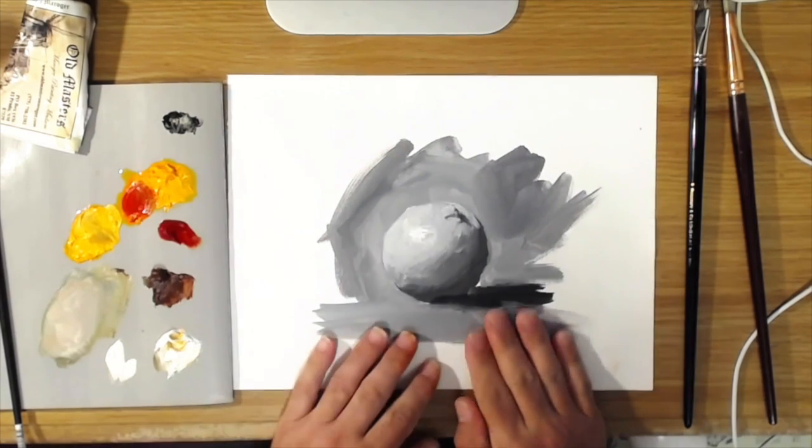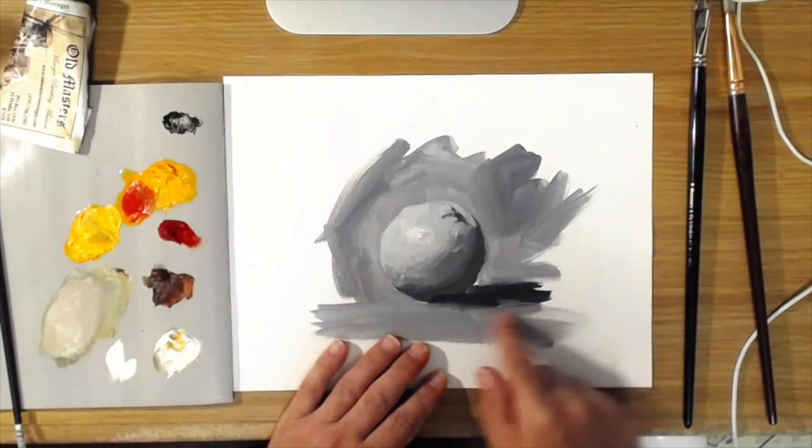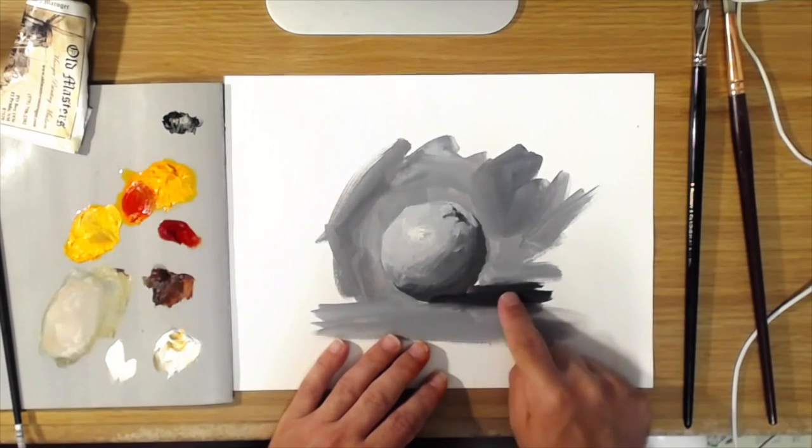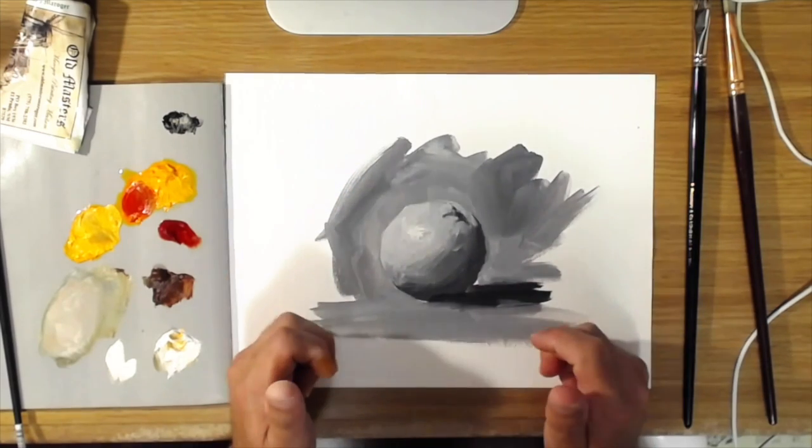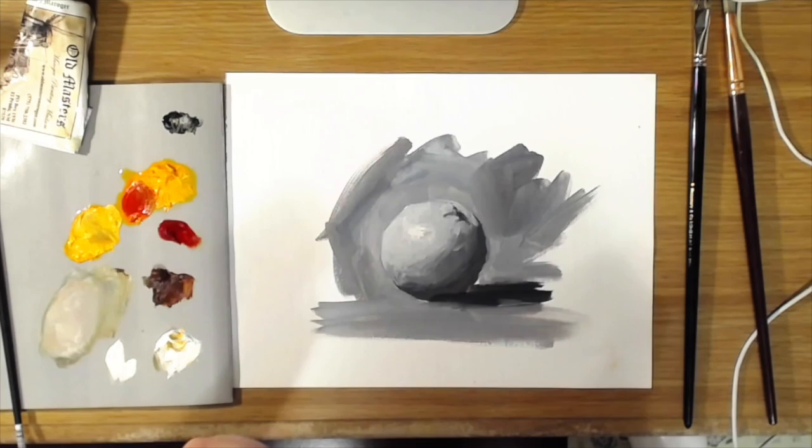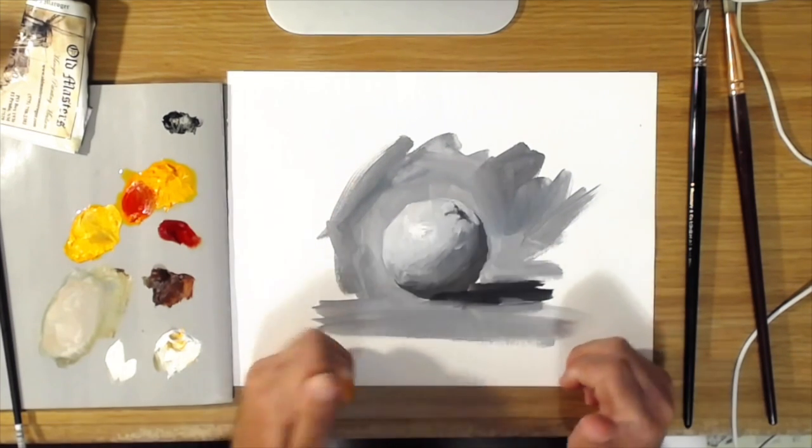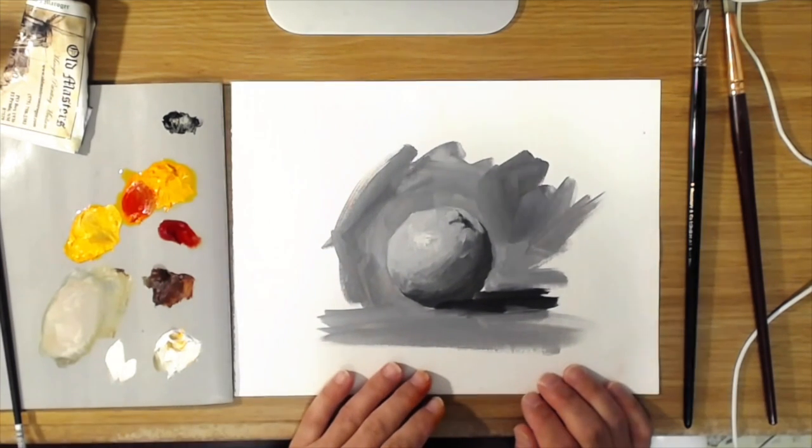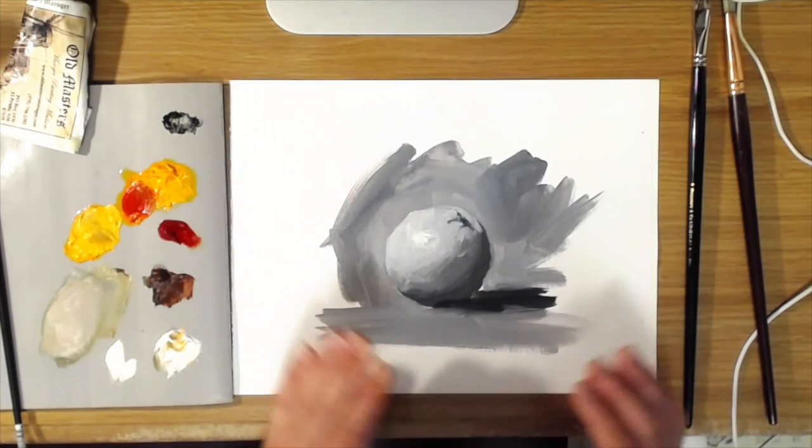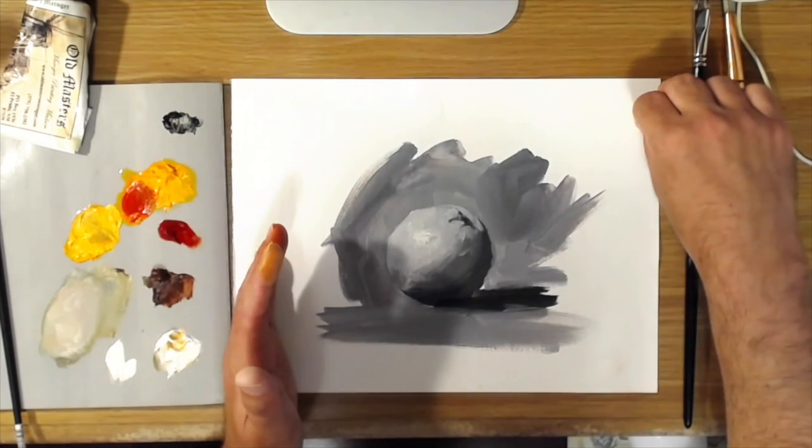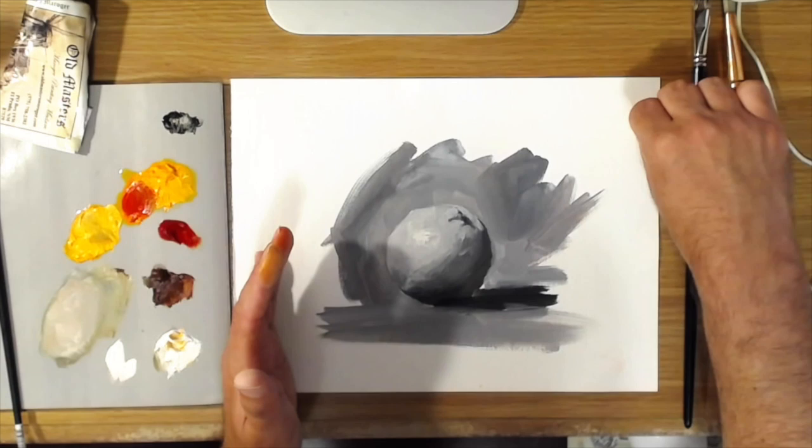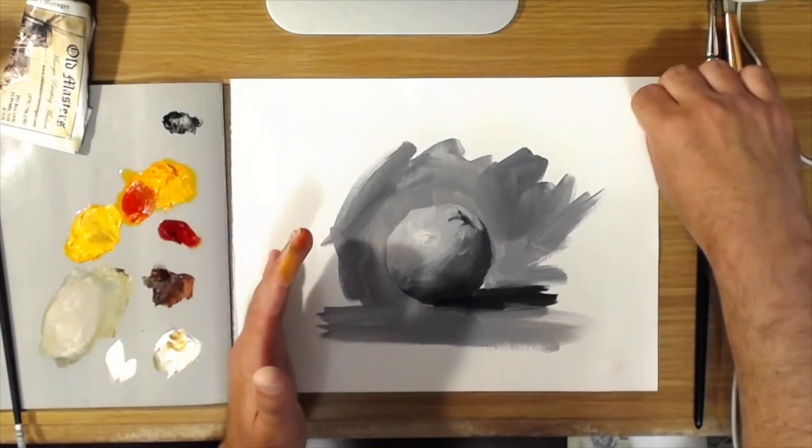As you can see, I've put in all the values. So the shadows are in, the form's already in. It's like you took a black and white photo of the other version. This is a technique known as grisaille.